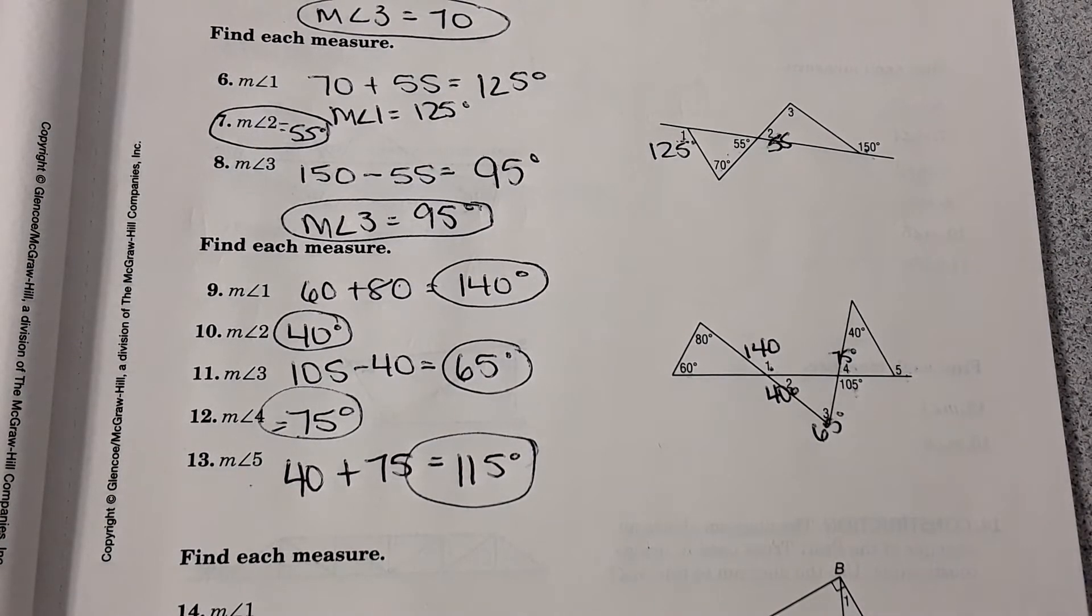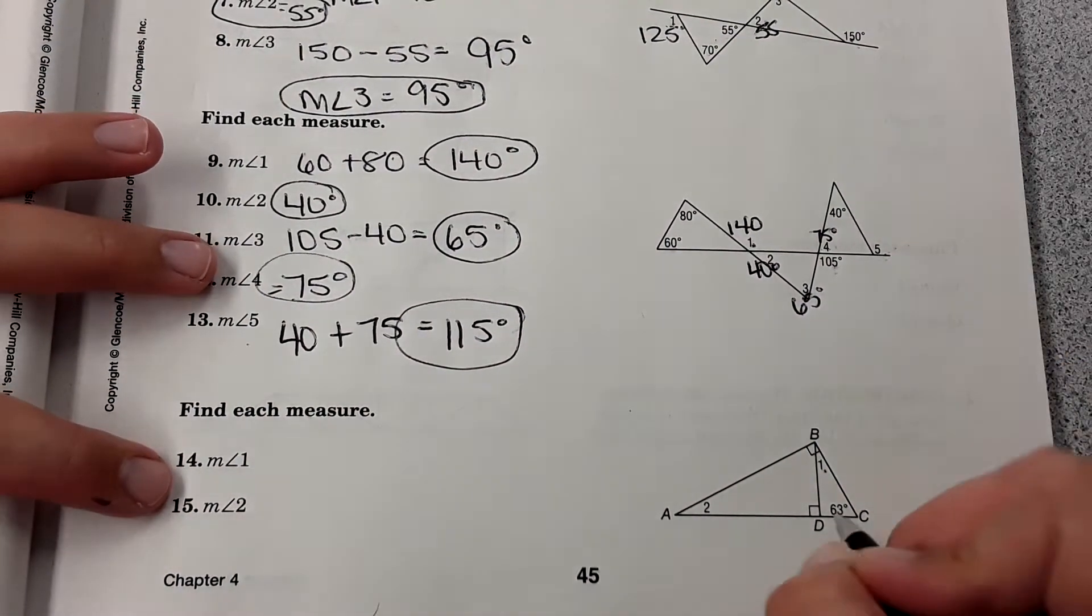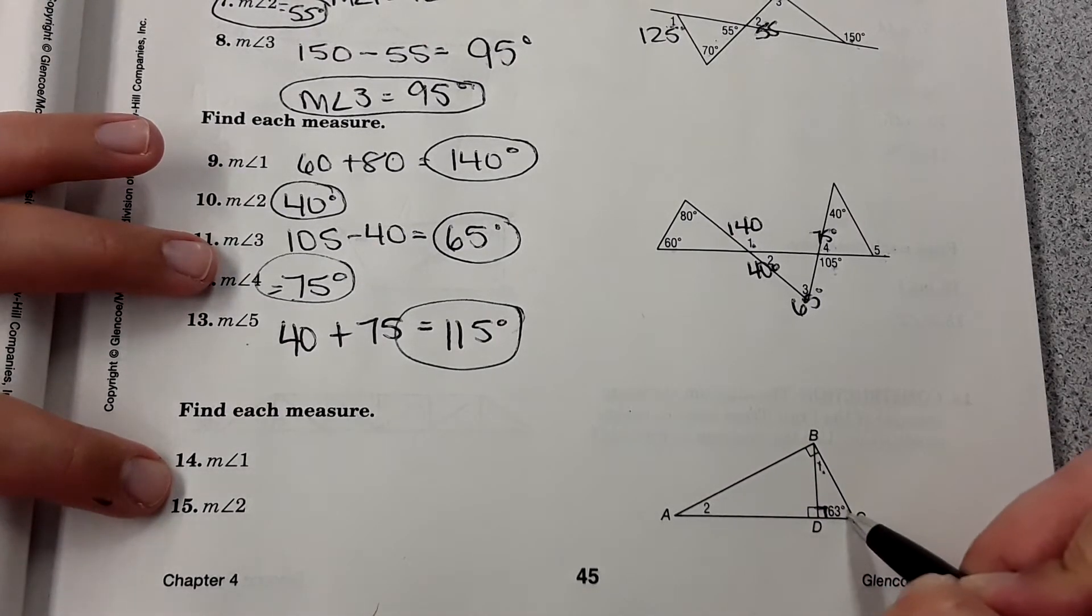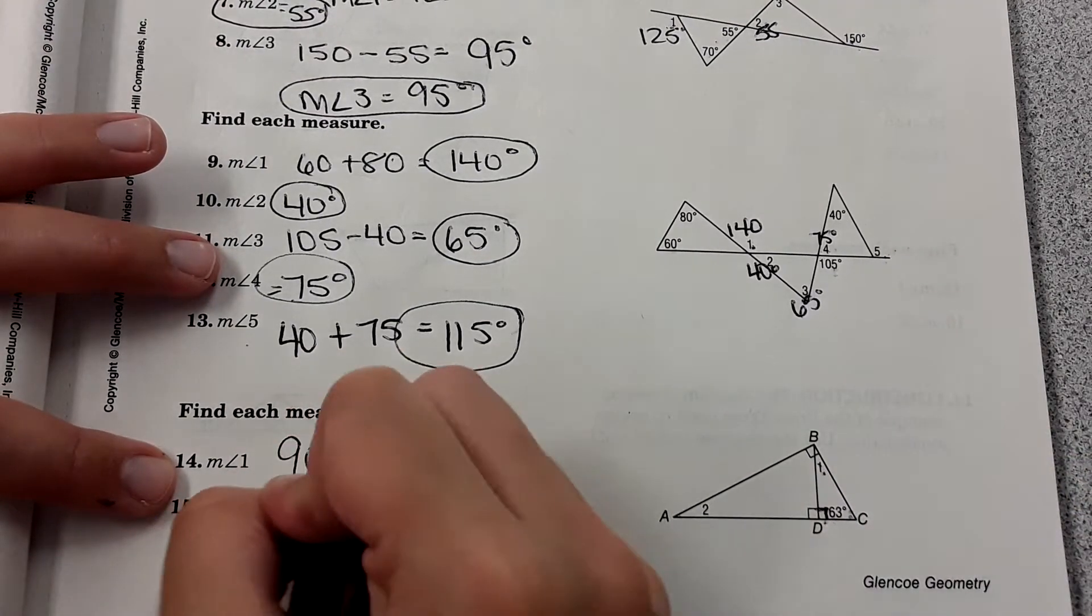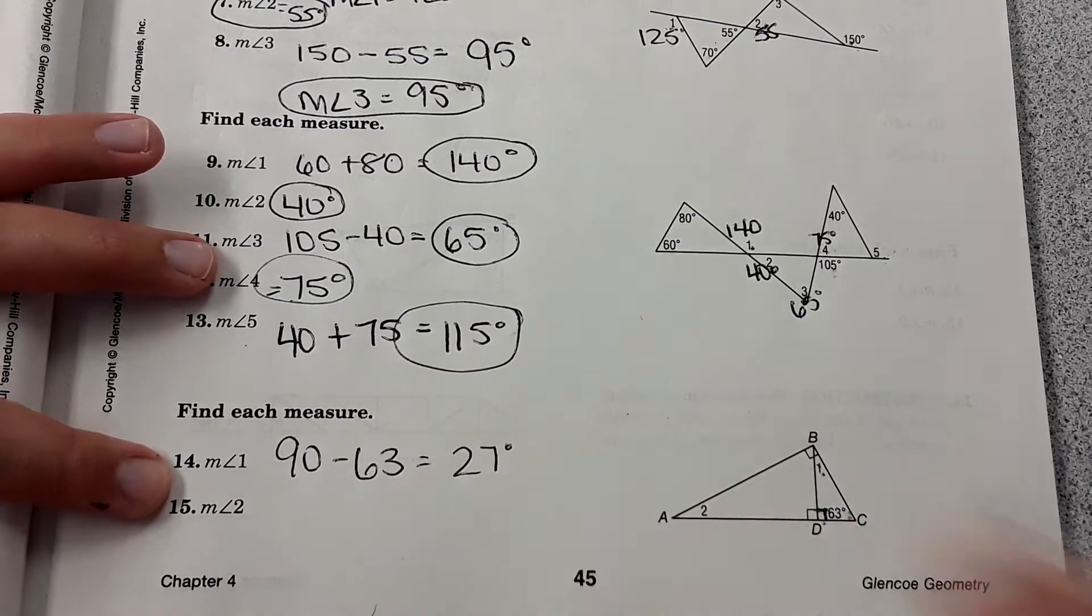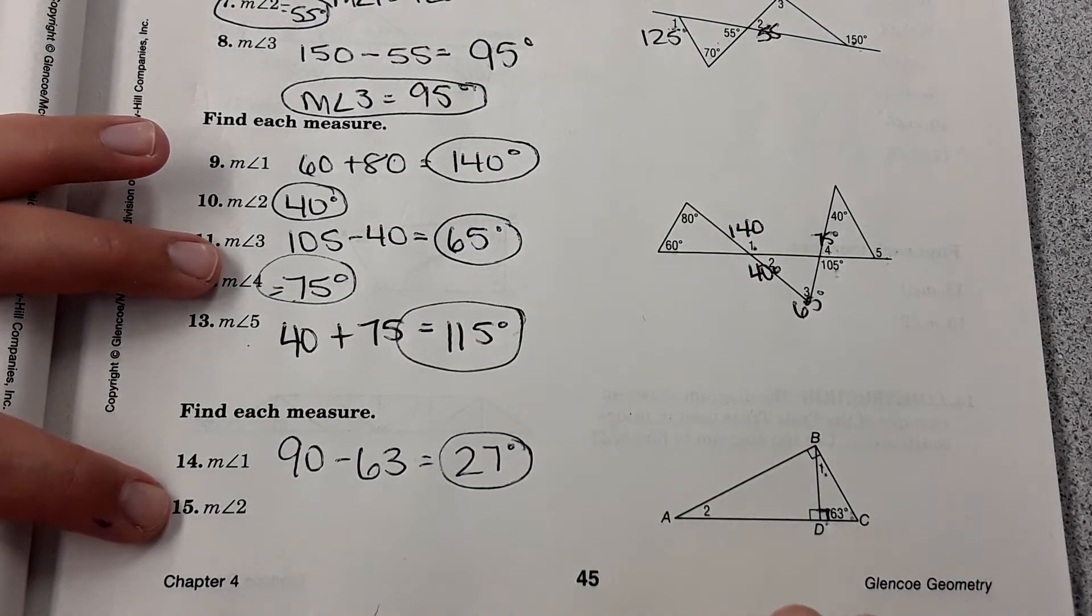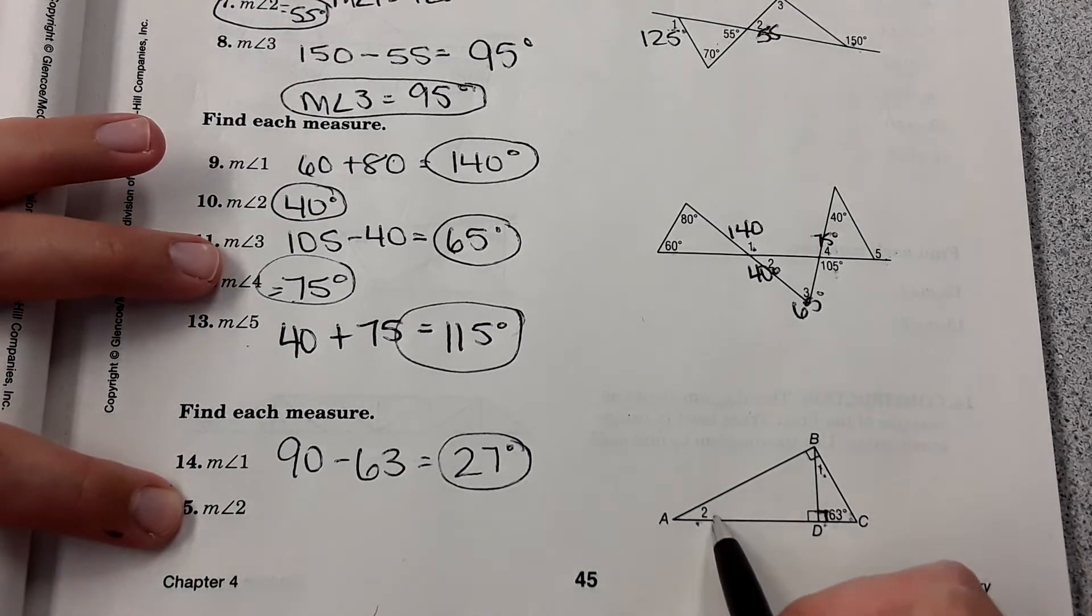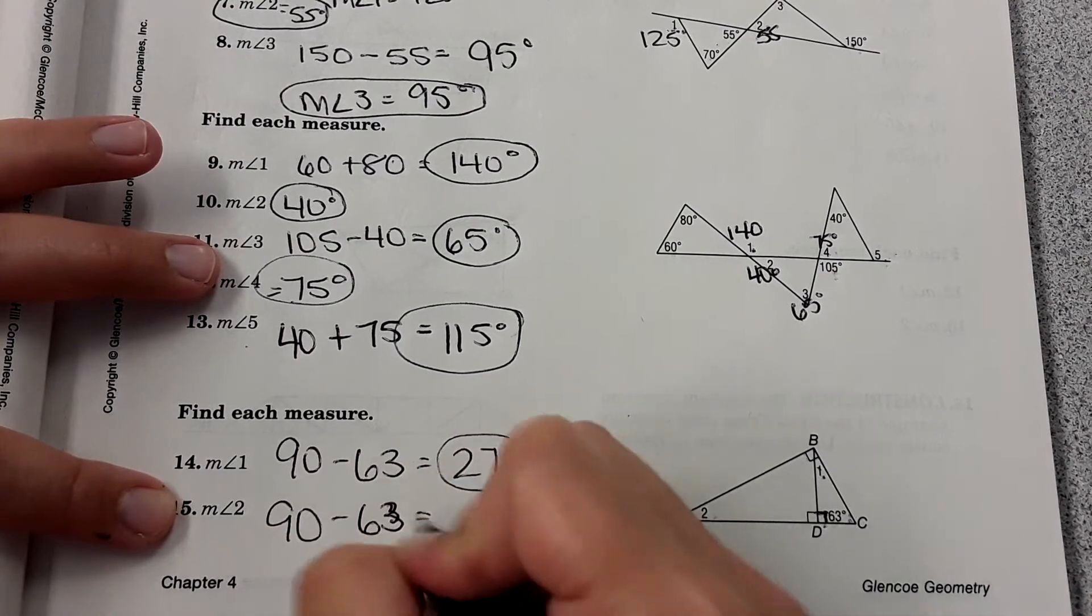And then 14 and 15, find each measure. Here measure of angle one, it shows a right triangle here. Remember these two angles have to add up to 90 if you have that 90 degree angle there. So 90 minus 63 equals 27 degrees, that is your answer. And then for measure of angle two, we have that 90 degrees, so 180 minus 90 is 90, and then 90 minus 63 gives us angle two, so it is also 27 degrees.